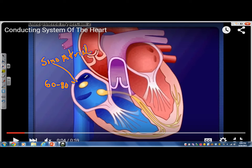But let's say, for example, that your SA node takes a dump, doesn't work. The next pacemaker that can take over is the AV node. So the AV node, if it has to take over, its natural rate of firing is about 40 to 60 beats per minute. So you'll notice a significant drop in a patient's heart rate if their SA node takes a dump. But you can do okay, at least for a little while.